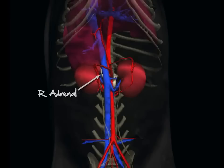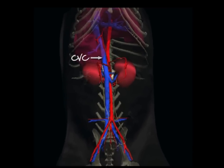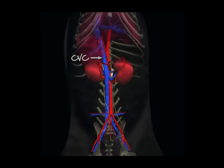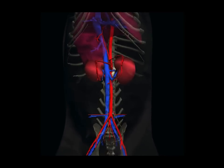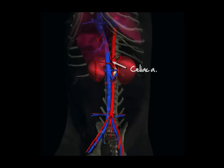The right adrenal is slightly more cranial and dorsal, and medial and dorsal to the right kidney, just lateral and dorsal to the caudal vena cava. The cranial mesenteric and celiac arteries branch off from the aorta just cranial to the left adrenal. The celiac artery, which is closest to the gland, branches into the splenic and hepatic arteries.